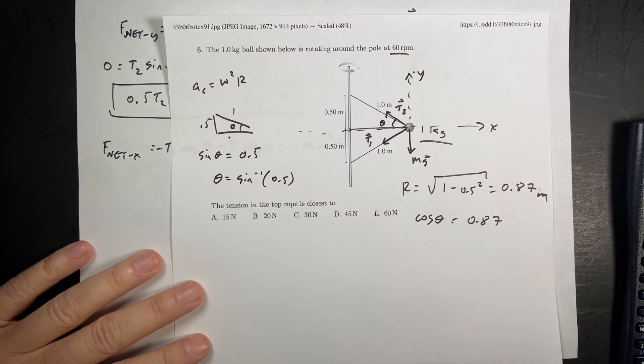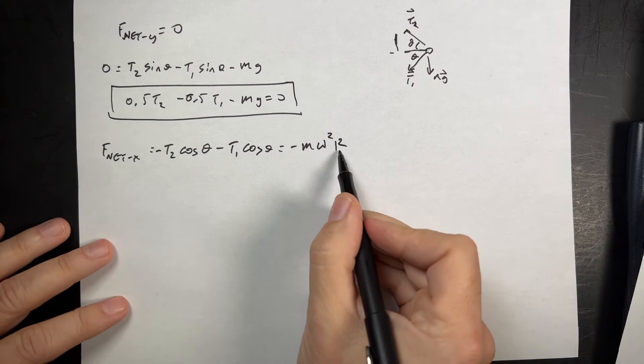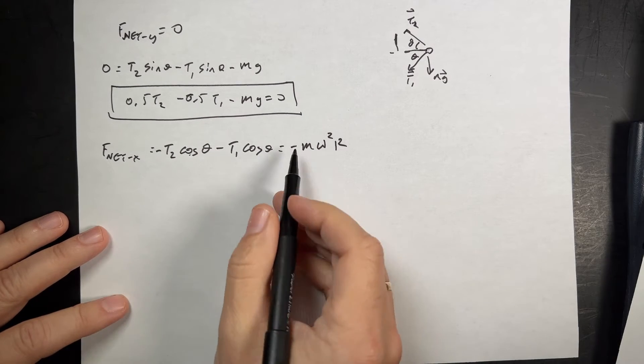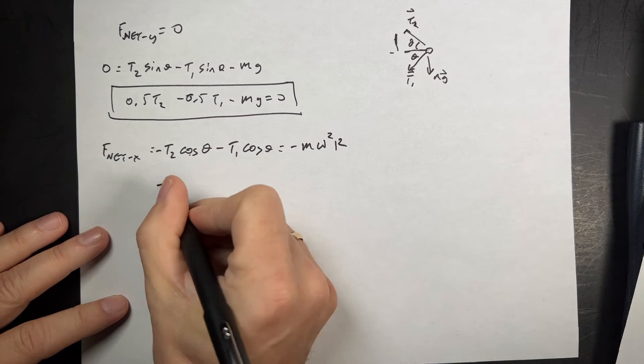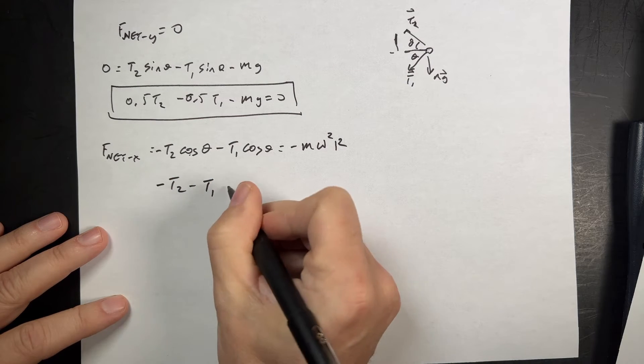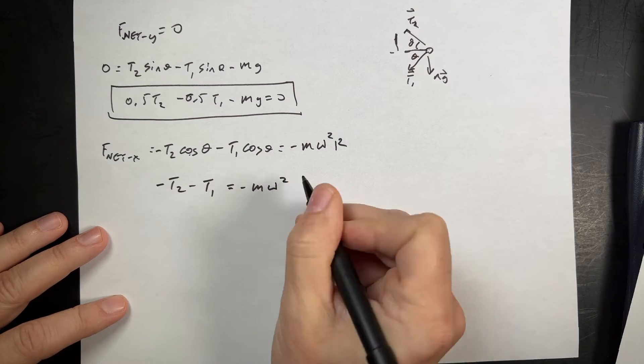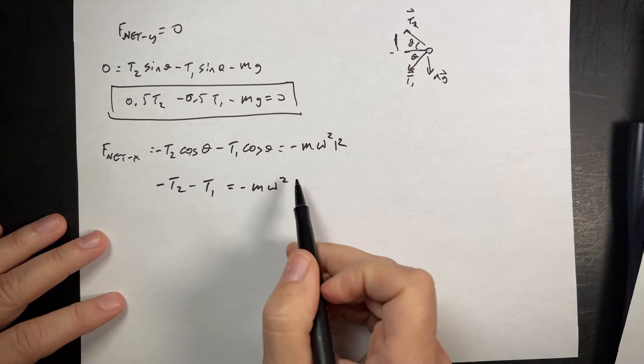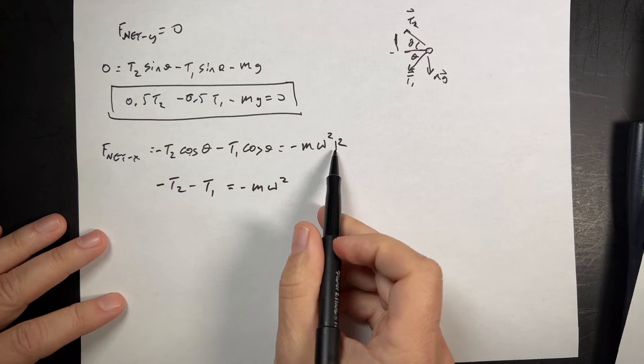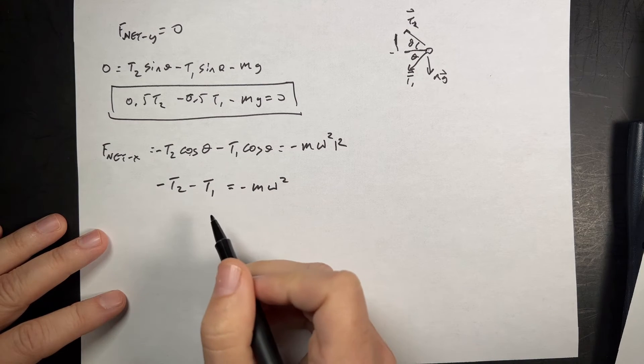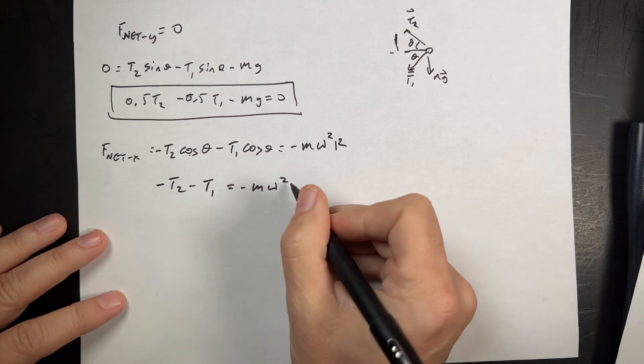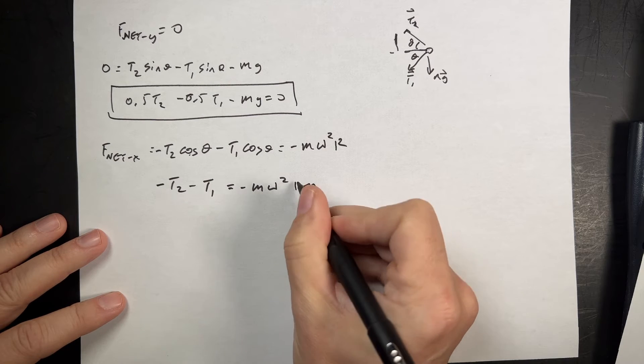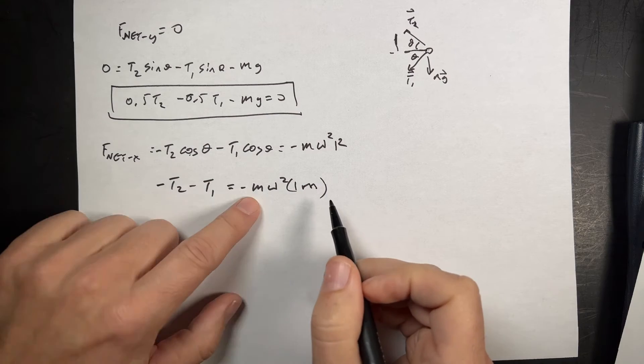Now I'll just need to get one more thing. So I have r, and you'll notice that that's the same as cosine theta. So I actually get negative T2 minus T1 equals negative m omega squared. Numerically. Numerically. Okay. I shouldn't put that. I did. Let's just say times 1 meter. There. Now it works. Okay.